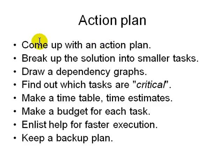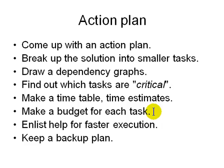Then you come up with an action plan. Break the bigger problem into small tasks and draw a dependency graph — task 1 depends on task 2, so this has to be solved first and this comes next. Find out which are the critical tasks, meaning the problem will not be solved unless those critical tasks are solvable and solved in time. Make a time estimate and a timetable: task 1 will take one week, task 2 will take two days. Draw a graph of dependencies and times. Make a budget for each task — how much will it cost, who will do it. Enlist help, because sometimes you can't do it alone. And if some task doesn't work out or there is a roadblock, you need a backup plan with alternate methods.